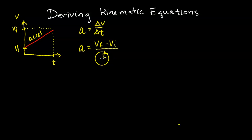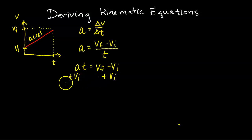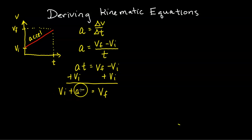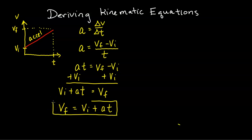From here I'm going to move t to the left side, so we get a·t equals v_final minus v_initial. Adding v_initial to both sides gives v_final equals v_initial plus a·t. This is our first kinematic equation.